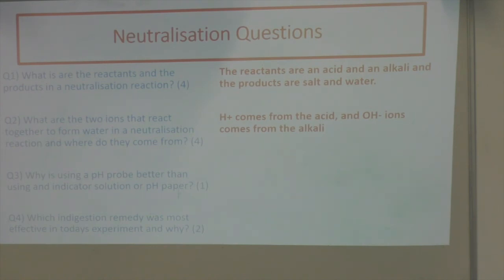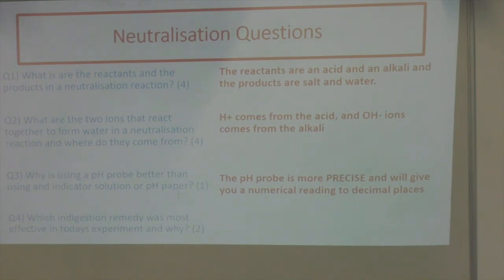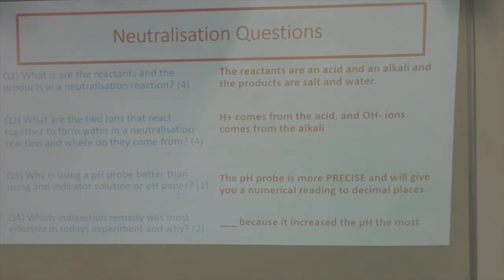Question three: a pH probe is better because it is precise — it gives a numerical reading to decimal places, which is much better than just seeing a colour from an indicator solution. Question four: indigestion remedy B was the most effective because it increased the pH the most, making the solution more alkaline — less acidic — which is exactly what an indigestion remedy should do. Well done for listening to the whole video and answering the questions.